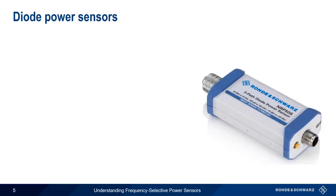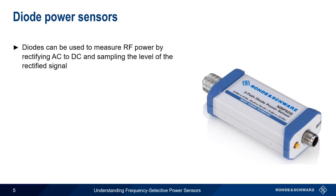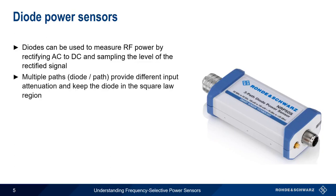Another way that we can measure RF power is by using diodes. Diodes are used to rectify the power — that is, convert AC to DC — and the sensor then samples the level of the rectified signal. Many diode-based power sensors have multiple paths, with one diode per path and different input attenuation per path. Based on the level of the input signal, different measurement paths are chosen to ensure that the diode is operating in its so-called square law region, which ensures accurate results.